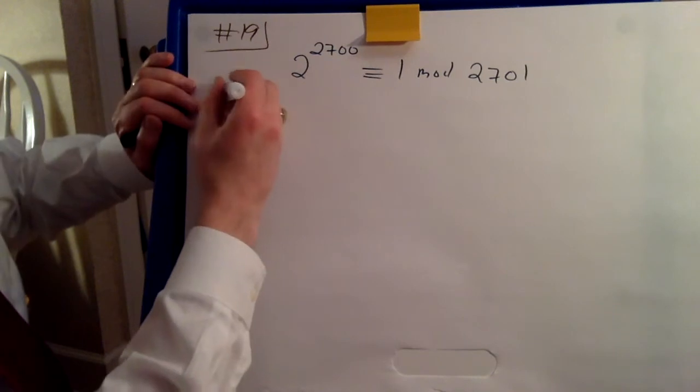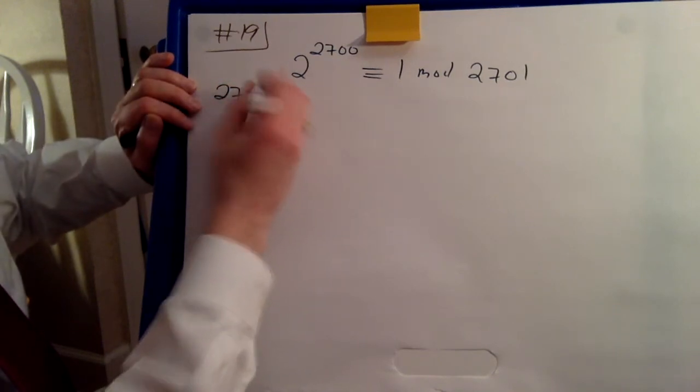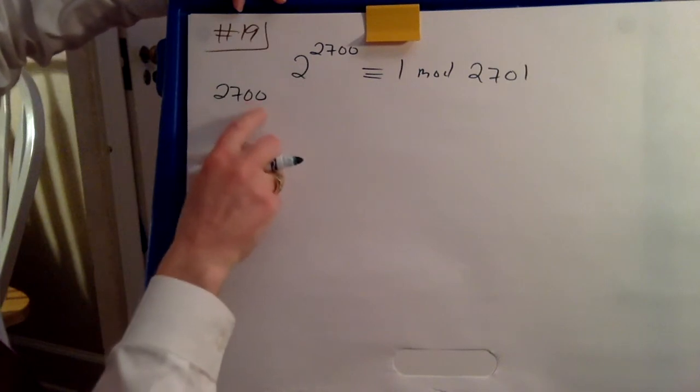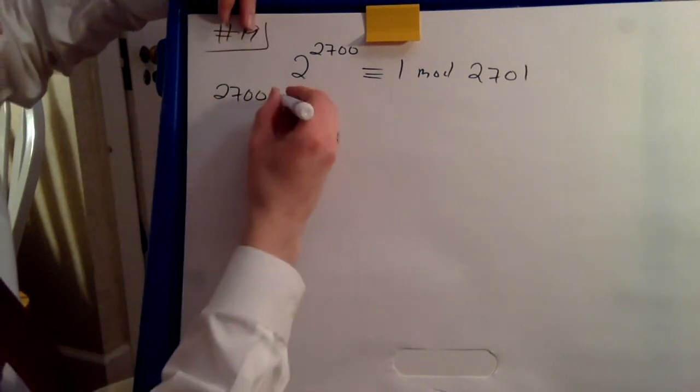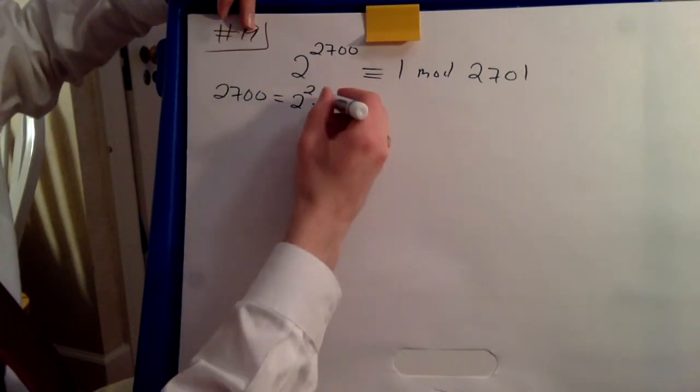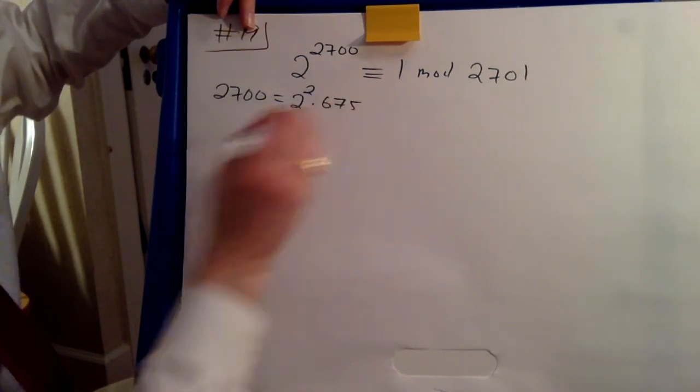Well, that means we have to look at how many... we have to take out all the factors of two we can in this exponent. You can see this is divided by two but not divided by eight. So this is 2 to the 2. Now you divide it by four, 675.